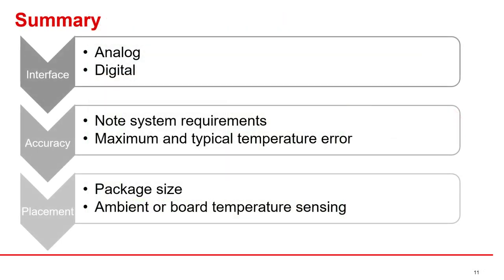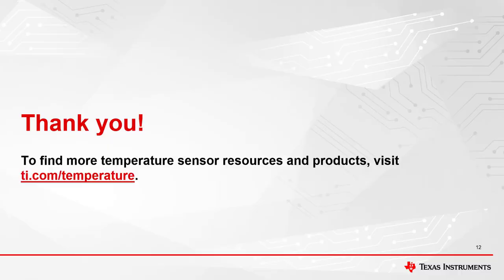In summary, this video discussed several important factors that should be considered when designing a temperature sensor into your system. After choosing an appropriate interface and properly understanding your system's accuracy requirements, optimal placement and board design can then be considered. Paying close attention to these fundamentals is an important first step in optimizing your sensor design. Thank you for watching this video on temperature sensing fundamentals.